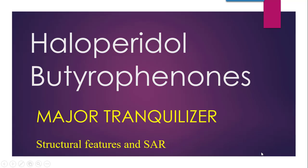Hello dear learners. Today's video lecture is on Haloperidol. Haloperidol belongs to the class butyrophenones and it is a major tranquilizer. As you all know, tranquilizers are basically classified into two types: major tranquilizers and minor tranquilizers. Haloperidol is one of the major tranquilizers which belongs to the class butyrophenones. We are going to discuss the structural features and SAR of Haloperidol.